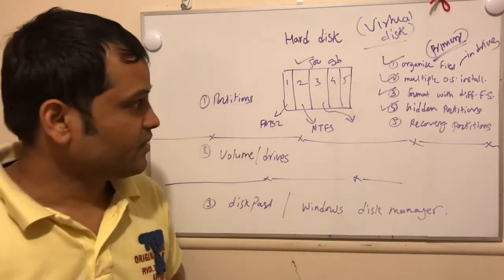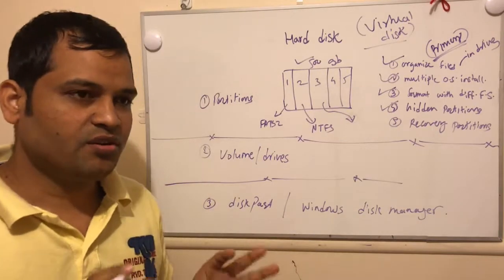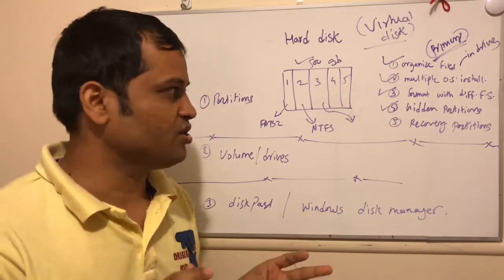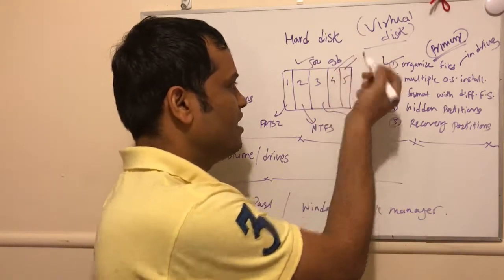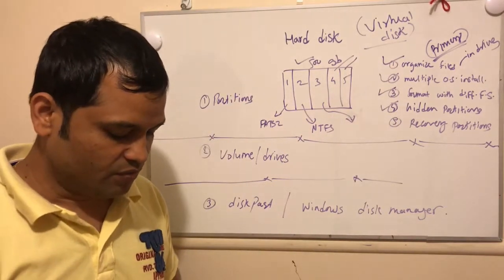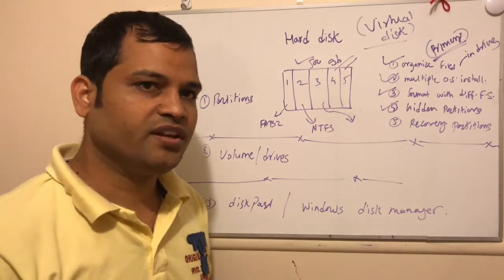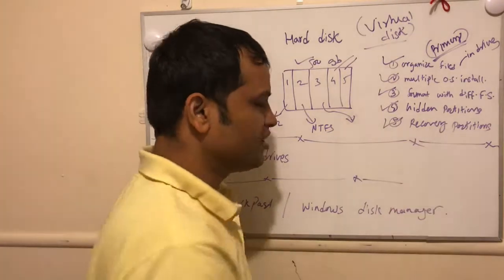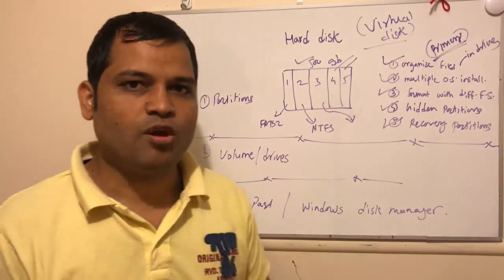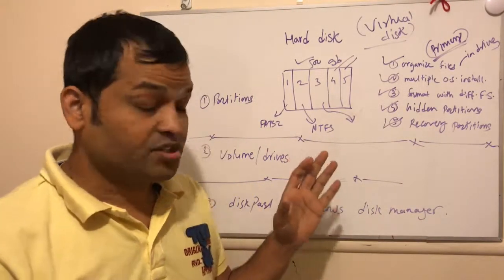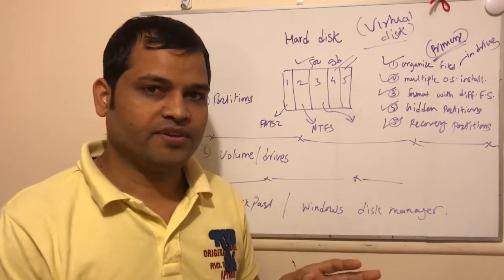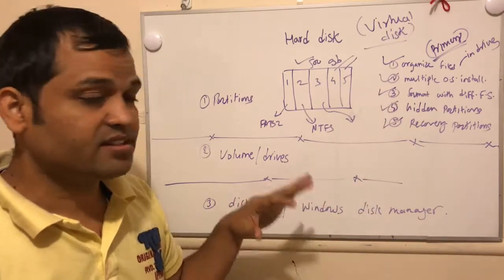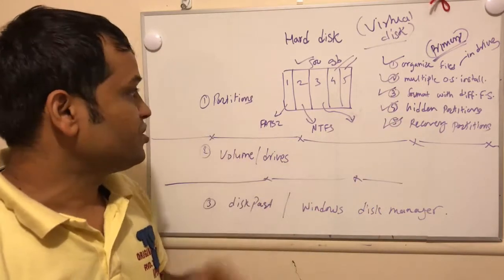Another advantage is we can have hidden partitions. For example, if I want to hide some data on the hard disk so only I can see it, I can hide partitions four and five — nobody can see the data in those hidden partitions. We can also have recovery partitions, which can be used to restore your system and troubleshoot problems. These are the benefits and that is the reason why we have partitions on a hard disk.